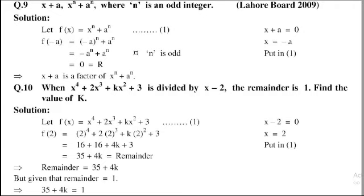Since x plus a is equal to 0 implies that x is equal to minus a, put in equation 1. So f of minus a equal to minus a whole power n plus a power n. Minus a power n plus a power n is equal to 0, so remainder equal to 0. Hence x plus a is a factor of x power n plus a power n.